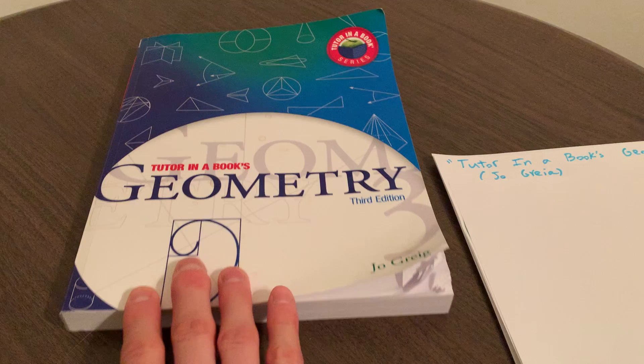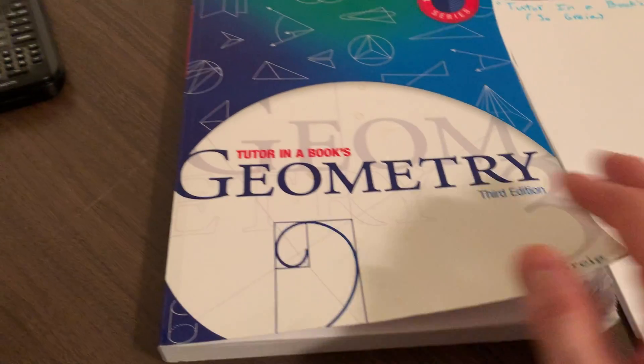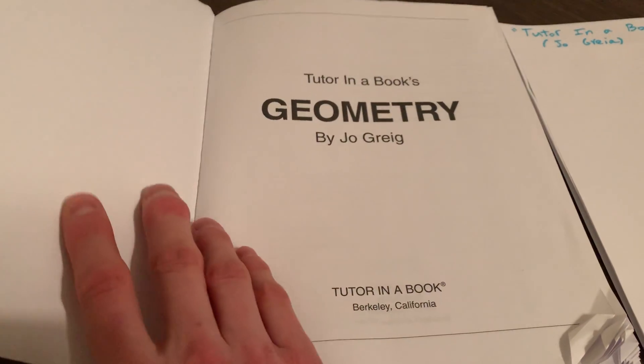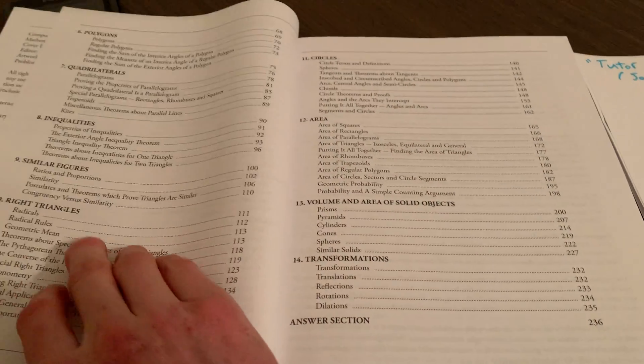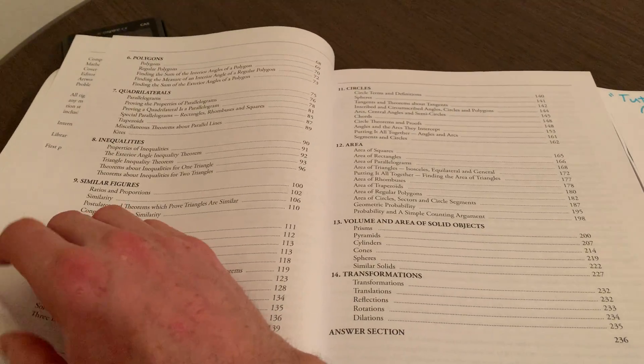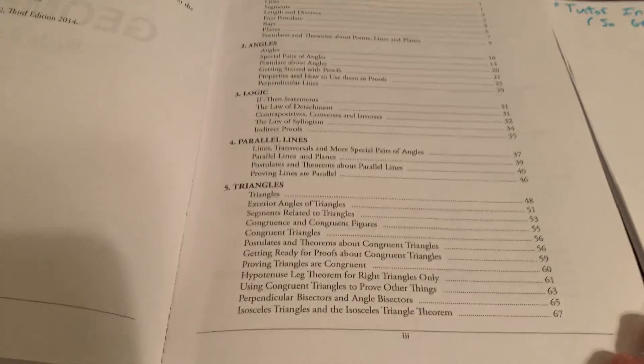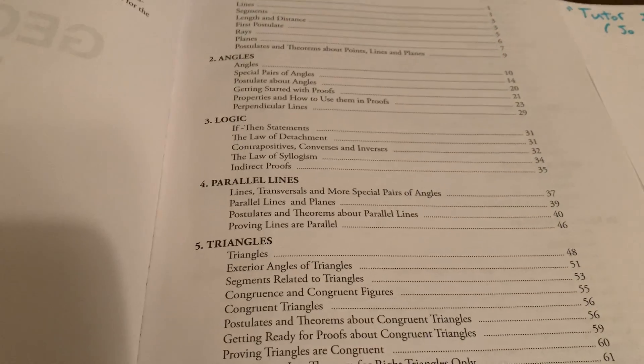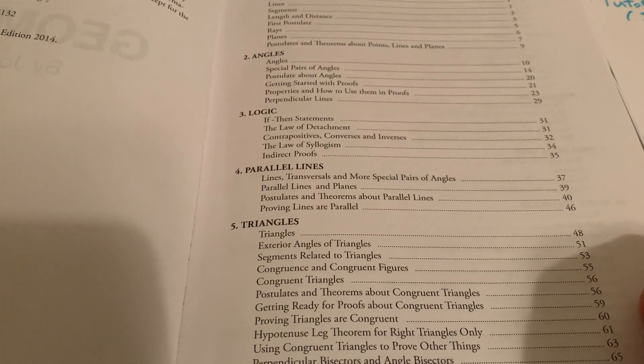This is Tutor in a Book's Geometry, and it's definitely designed for a high school class. You can self-study from it. The only negative thing I would say about it is that it's a little bit cluttered, but other than that, it's not a bad book at all. Chapter 3 is on logic, so we're going to go through that a little bit here. Page 31.